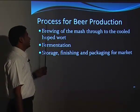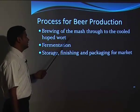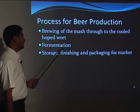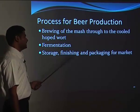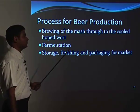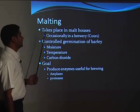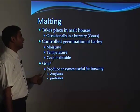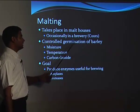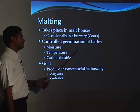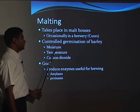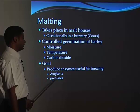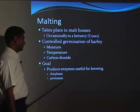In beer production, the first stage is brewing: malting, then the cooled wort, then fermentation, then storage, finishing, and packaging for market. Malting takes place in malt houses — occasionally in the brewery itself — to control germination of barley. Moisture, temperature, and carbon dioxide are maintained. The goal is to produce enzymes useful for brewing, primarily amylases and proteases.